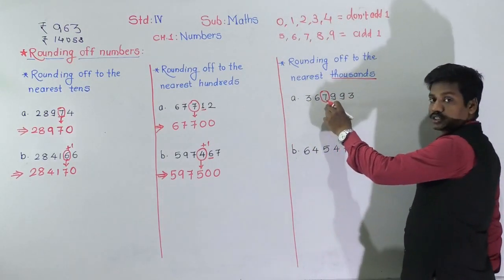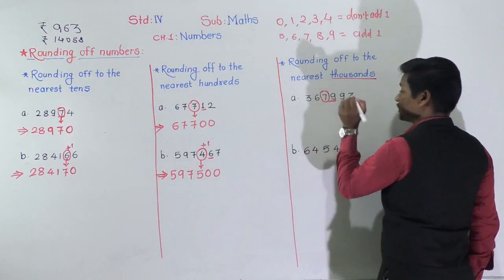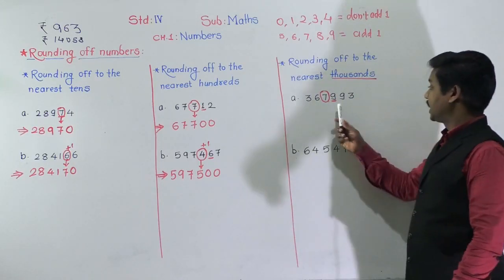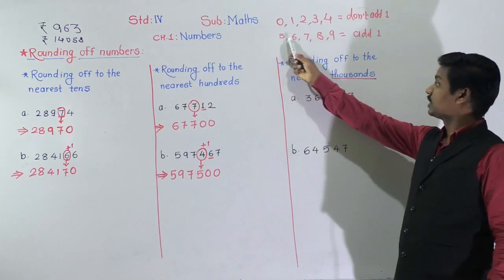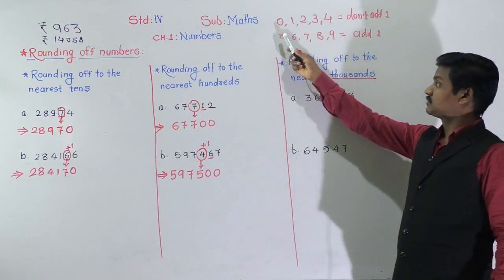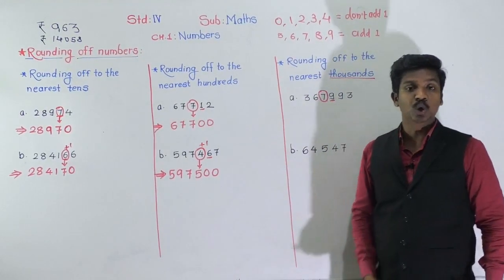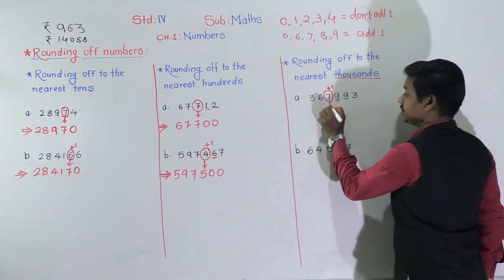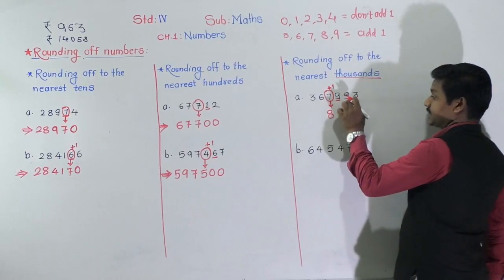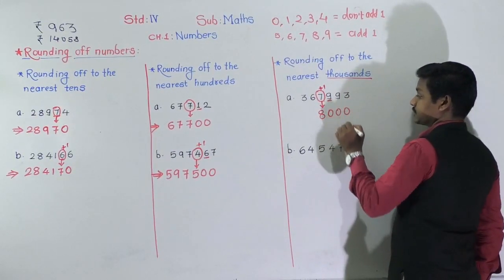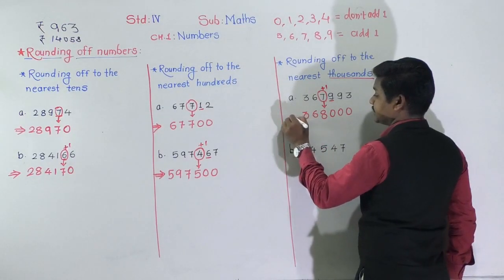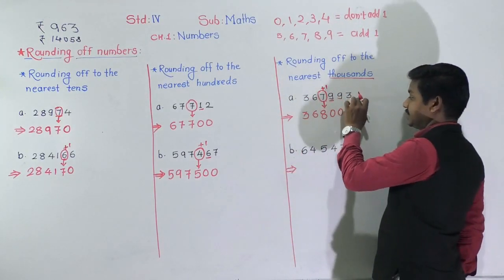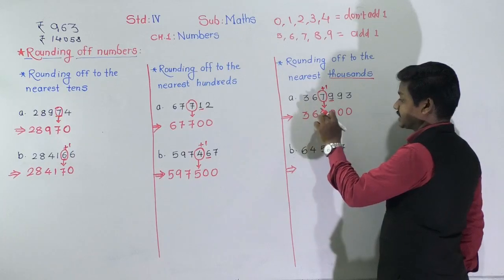After finding the thousands digit, see the next digit. After 7, which digit is there? Nine. That means it falls in our second rule: if the next digit is 5, 6, 7, 8, or 9, we add 1 to the thousands place digit. So 7 plus 1 equals 8. For the next three digits, write three zeros, and take the digits before as they are. So 367,993 after rounding off to the nearest thousand gives us 368,000.